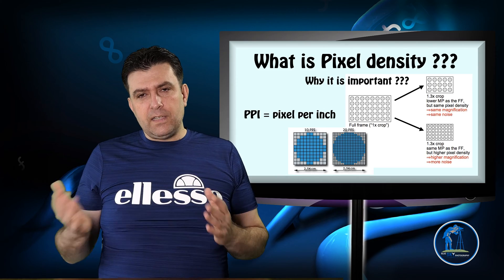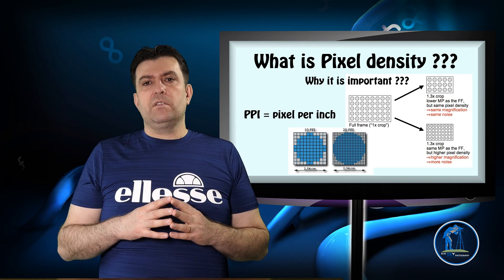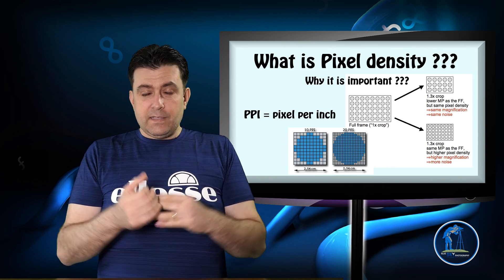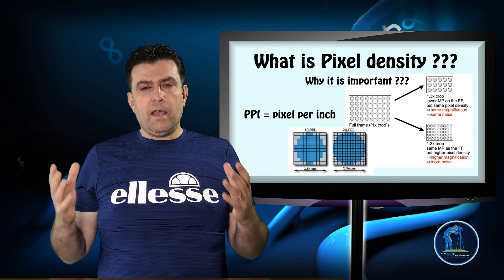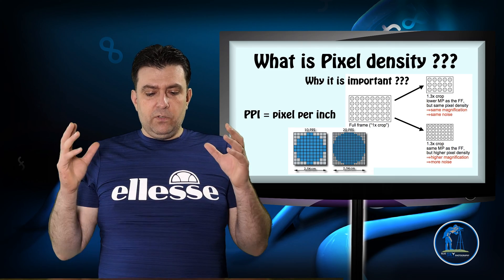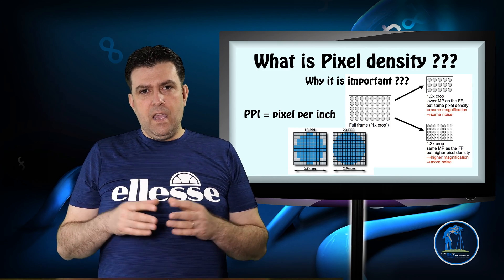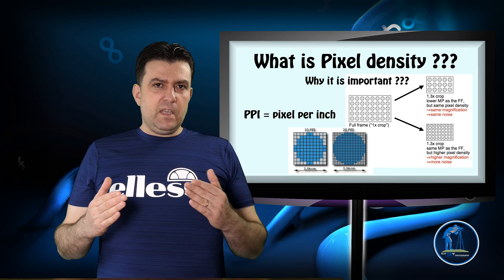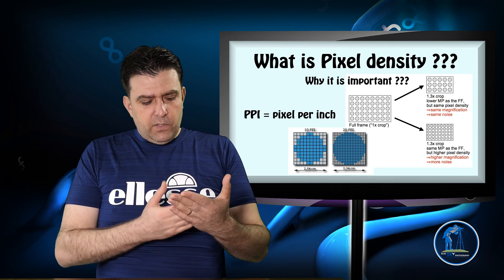Now I can't go much higher than ISO 3200, sometimes 4000 — that's my maximum because I don't like noisy images. But I can compensate with artificial light, flash, or video light. The one thing you cannot add in post-processing is sharpness and details. You can apply sharpening, but it won't look the same — it looks different.